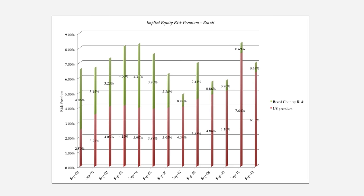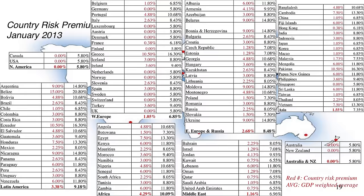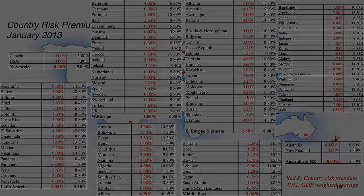At the start of every year, I develop a table of equity risk premiums by country. This table from the start of 2013 uses the 5.78% implied premium for the US — rounded to 5.8% — as the base. That is the premium I use for every mature market, which I define as any country with a AAA rating. For every other country, I add an additional premium based on the rating, the default spread, and adjusting that spread for additional risk. This table gives you the entire picture of equity risk premiums by country.